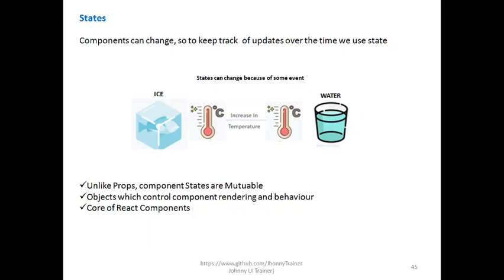Now let us have a brief comparison between props and states. In our previous session we discussed about props — these are passed to the components like function parameters, these are immutable, meaning we cannot change them. Props can be used in functional components as well as class components. In functional components we use the keyword 'props', whereas for class components we use 'this.props'.